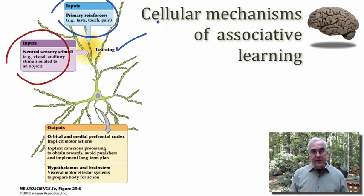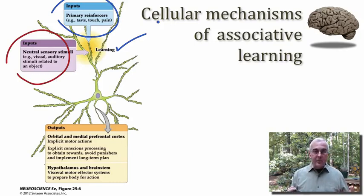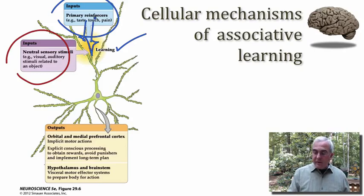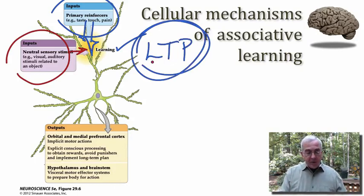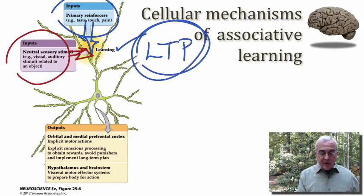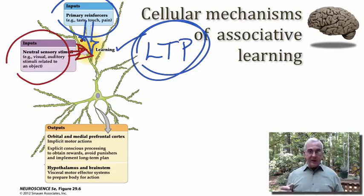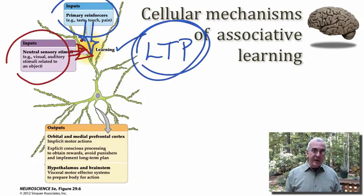The mechanisms of synaptic plasticity we have in mind here include long-term potentiation (LTP) and long-term depression (LTD). In particular, if we're talking about building up an association of a strong stimulus with what is initially a weak stimulus, the mechanisms that allow long-term potentiation to operate can increase the impact of this sensory stimulus that was initially neutral and weak — but following associative learning, it might take on a life of its own due to the strengthening of the synaptic connection.